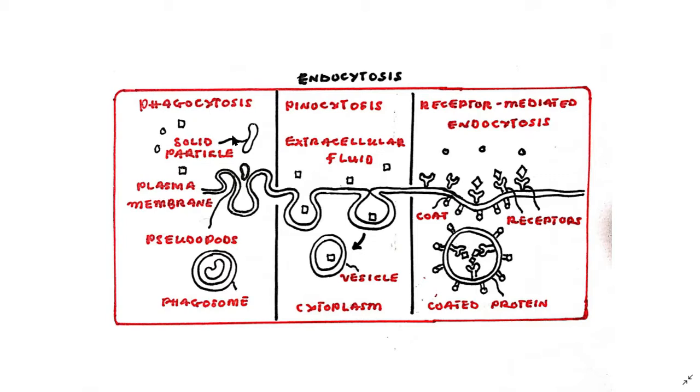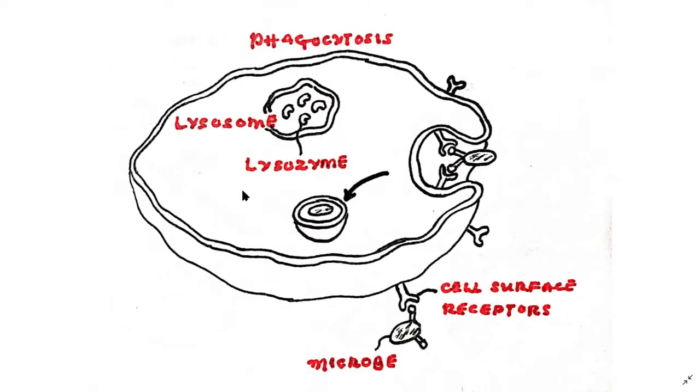Now what is phagocytosis? Phagocytosis is basically a process where a cell binds to an item it wants to engulf on the cell surface. It draws it in and then forms a membrane around it.